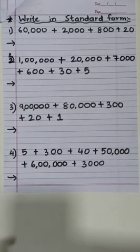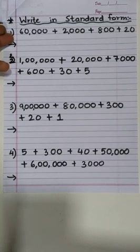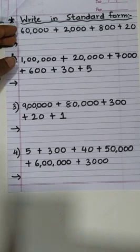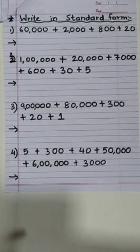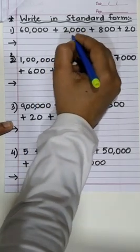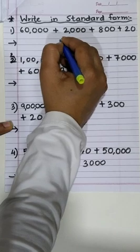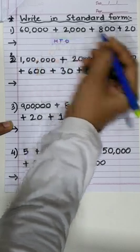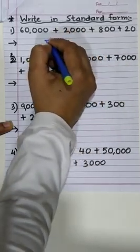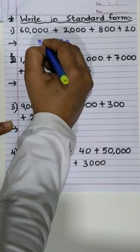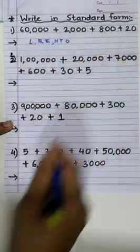Now we are going to do the opposite of what we just did. We have been given the expanded form of numbers. We have to write the standard form now. I always tell you, it's better to write the periods first: ones, tens, hundreds, thousands, ten thousands and lakhs, right?